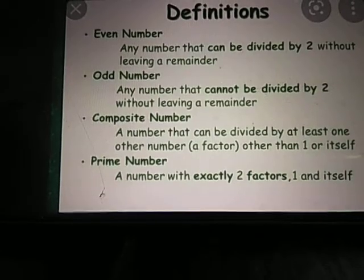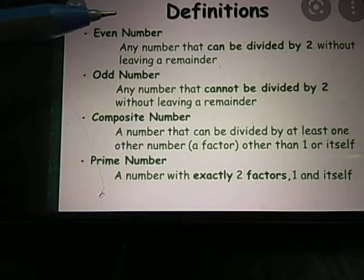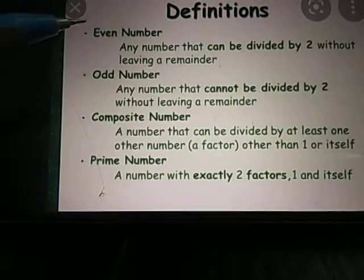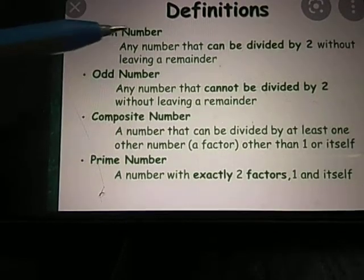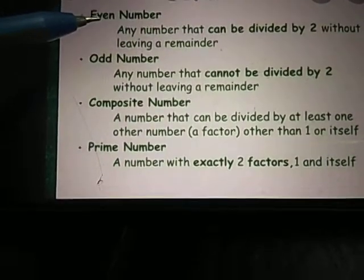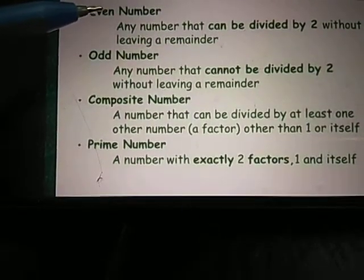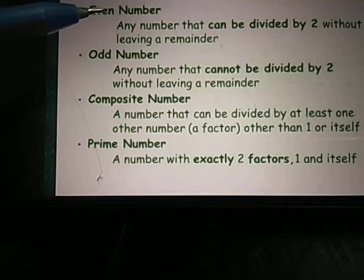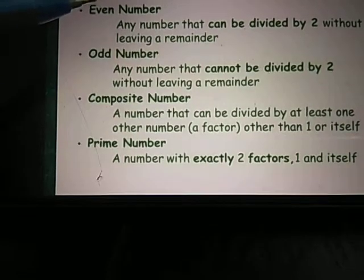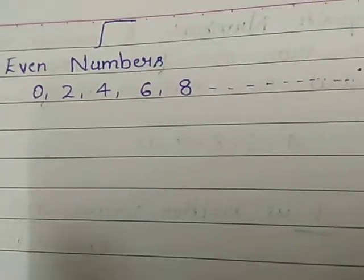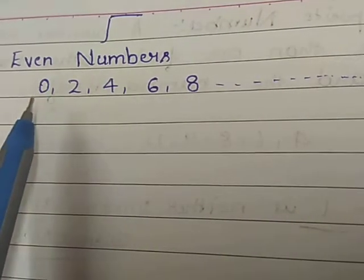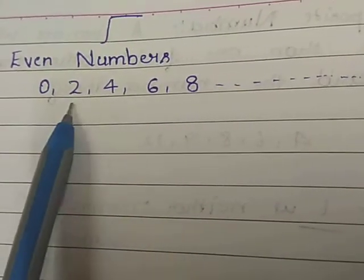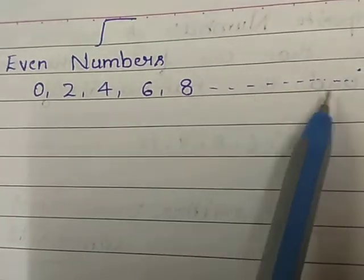Next we will be learning about even numbers. What are even numbers? Any number that can be divided by 2 without leaving a remainder is nothing but an even number. Or you can say numbers which are divisible by 2. Even numbers start from 0, 2, 4, 6, 8 and so on.